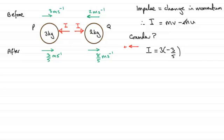Then you've got minus the initial momentum. So it'll be the mass, 3, multiplied by the initial velocity. And that is now also in the opposite sense to this direction. So it's going to be minus 3.